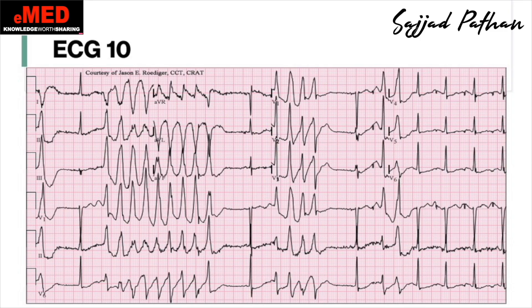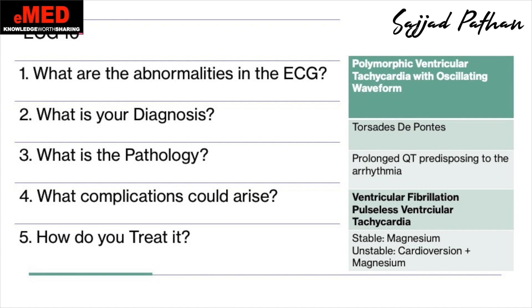The last ECG: this is polymorphic ventricular tachycardia with an oscillating waveform. The diagnosis is Torsades de Pointes. The pathology is prolonged QT, which predisposes to this arrhythmia; hypomagnesemia could also be a possibility. Treatment: if stable, treat with magnesium; if unstable, treat with cardioversion plus magnesium. The complication is that patients can go into ventricular fibrillation or pulseless ventricular tachycardia.